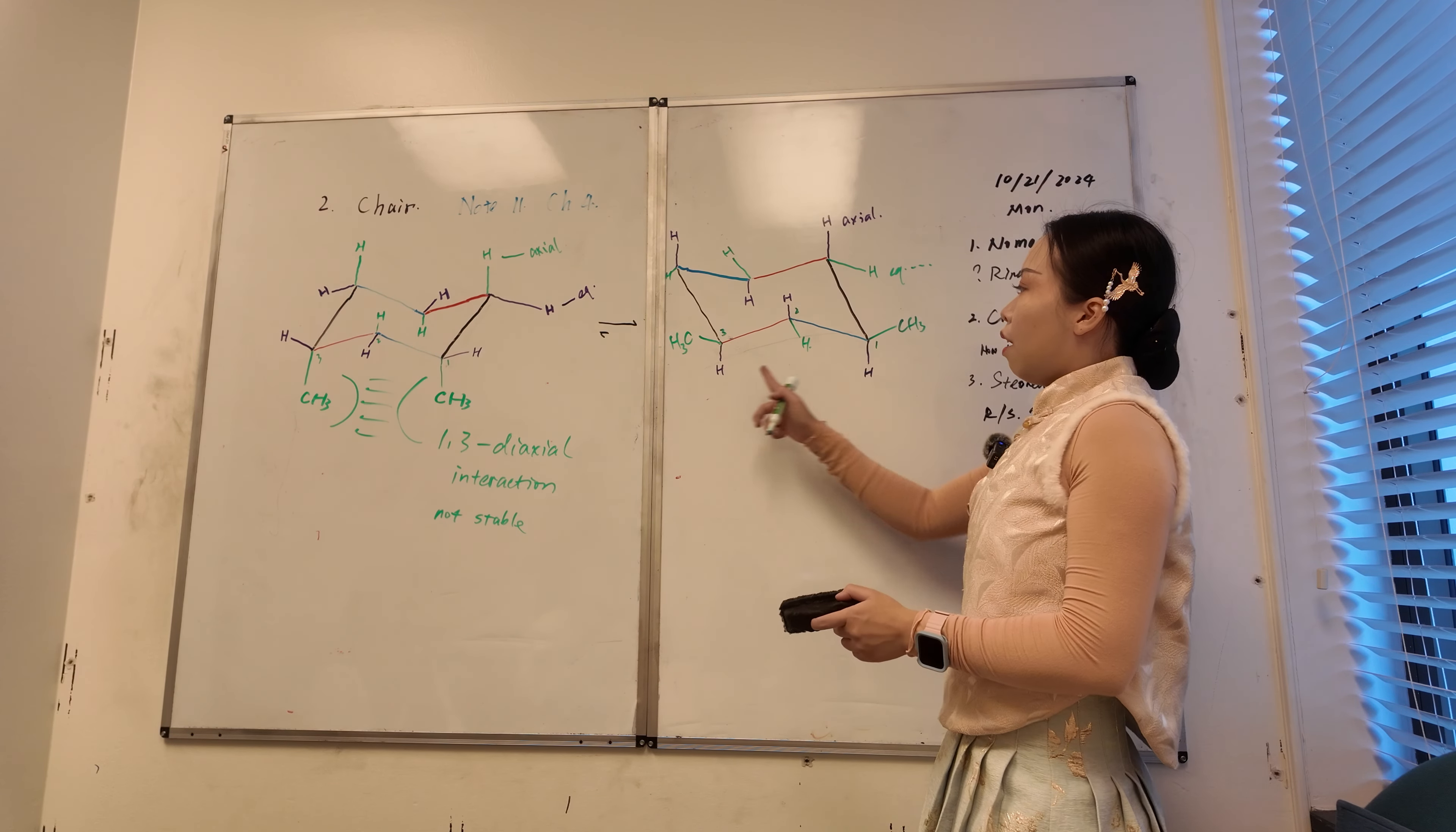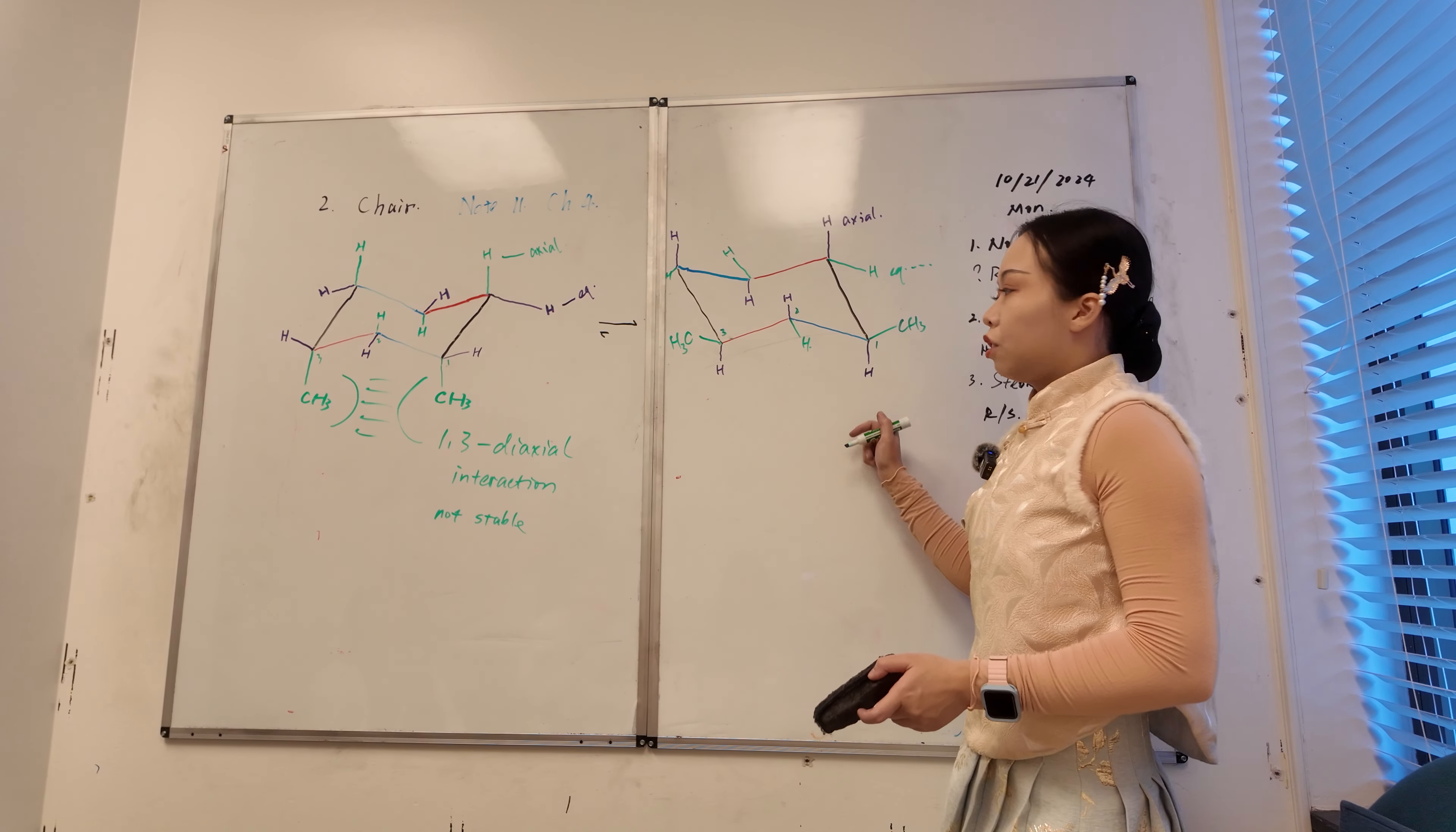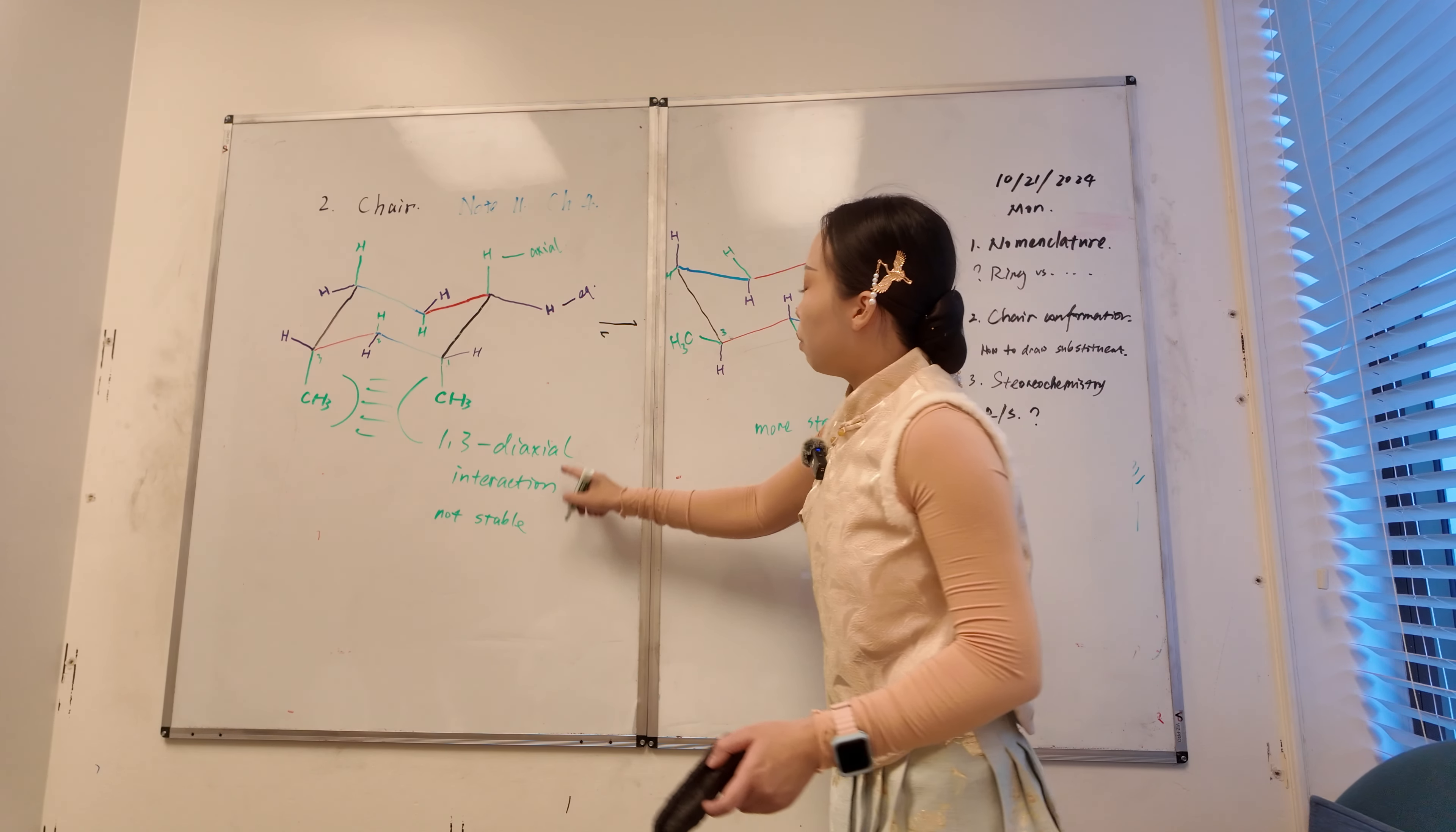So now, my 1,3-diaxial only have hydrogen. That's less steric hindrance or less steric repulsion. So this will be more stable. This is not stable.